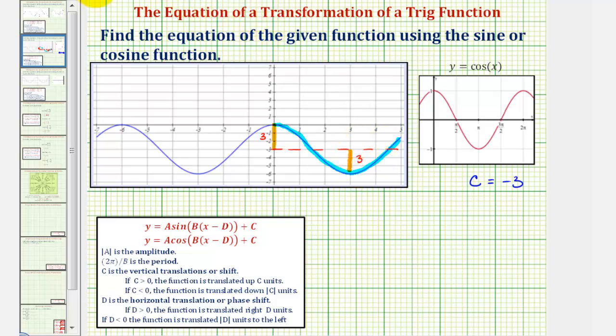And also notice, if we take a look at the five key points for the basic cosine function, starting at x equals zero, we have a max, then back to the midline, then a minimum, then the midline, then a maximum. And our function follows that same pattern, which means A would be positive three.